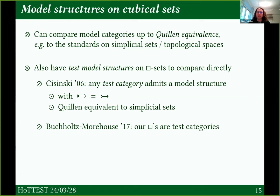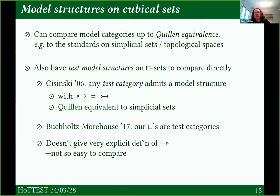Ulrich Buchholtz and Ed Morehouse in 2017 showed that all the cube categories I listed are test categories, so they have Cisinski test model structures which are presentations of standard spaces. Unfortunately, these test model structures aren't necessarily constructive, and we don't get a very explicit definition of what the fibrations are, so it's not very easy to compare with these model structures from type theory.